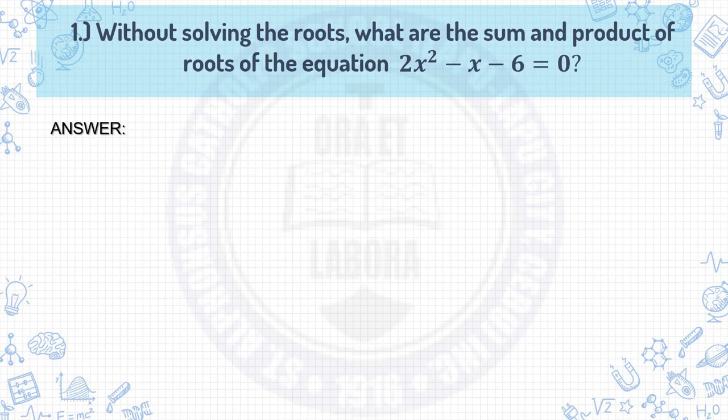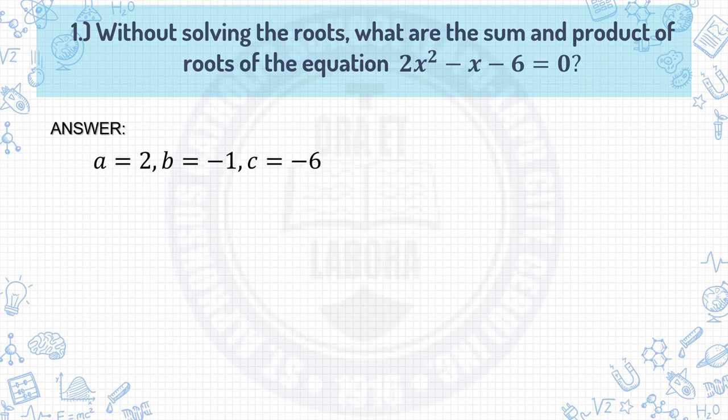Example number 1: Without solving the roots, what are the sum and the product of the roots of the equation 2x² minus x minus 6 equals 0? First, you need to identify the values of a, b, and c. Remember, in order to identify these values we need to transform the given equation into its general form. Luckily, the given is already in general form. So a is 2, b is negative 1, and c is negative 6.